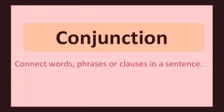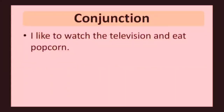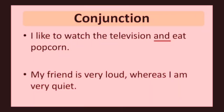Conjunction. Conjunction connects words, phrases, or clauses in a sentence. Examples: and, but, although, or. I like to watch the television and eat popcorn. The conjunction in this sentence is and. My friend is very loud whereas I am very quiet. The conjunction in this sentence is whereas.